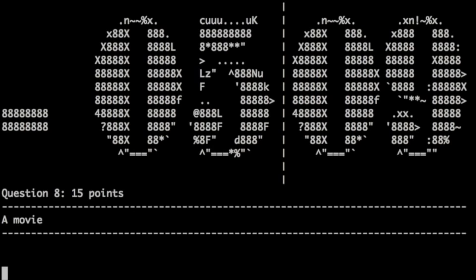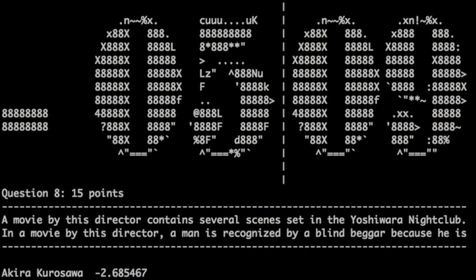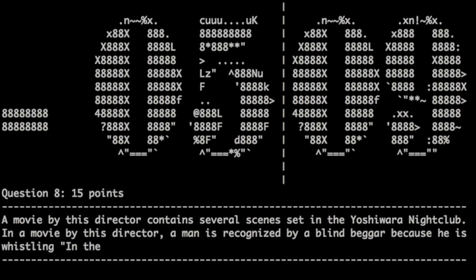A movie by this director contains several scenes set in the Yoshinwara nightclub. In a movie by this director, a man is recognized by a blind beggar because he is whistling in the hall of the Mountain King. That is Fritz Lang. That is correct. Perfect. On the board!